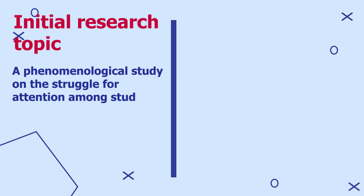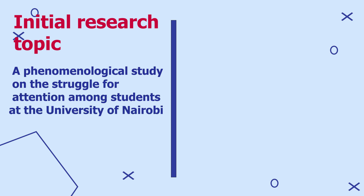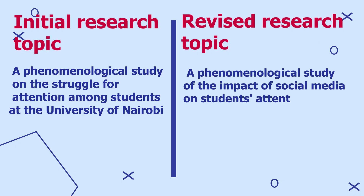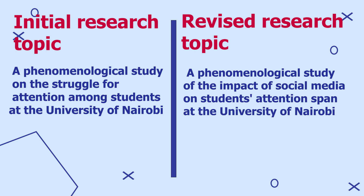The literature review also helps you to refine your research topic. For example, after conducting my literature review, I noticed that my original topic — a phenomenological study on the struggle for attention among students at the University of Nairobi — was not clear. Noting that past studies focused on social media as the main cause of poor attention, I can refine my topic to: 'A phenomenological study of the impact of social media on students' attention span at the University of Nairobi.'